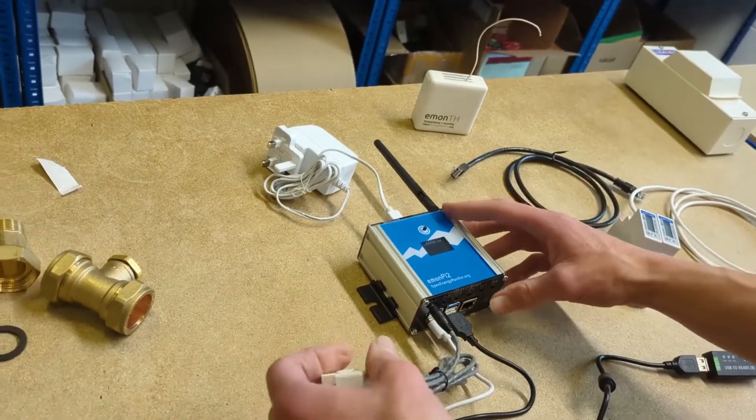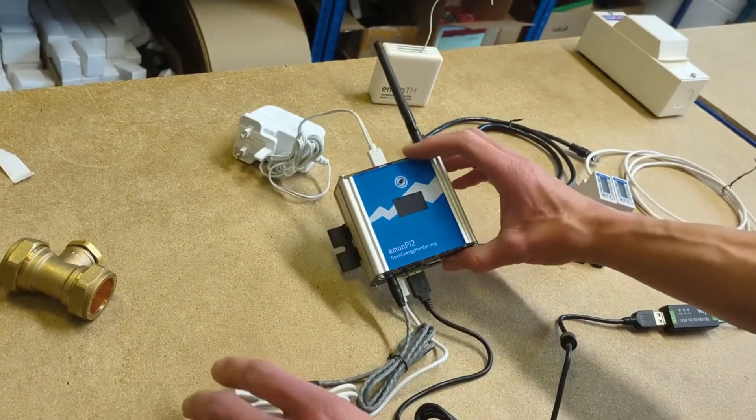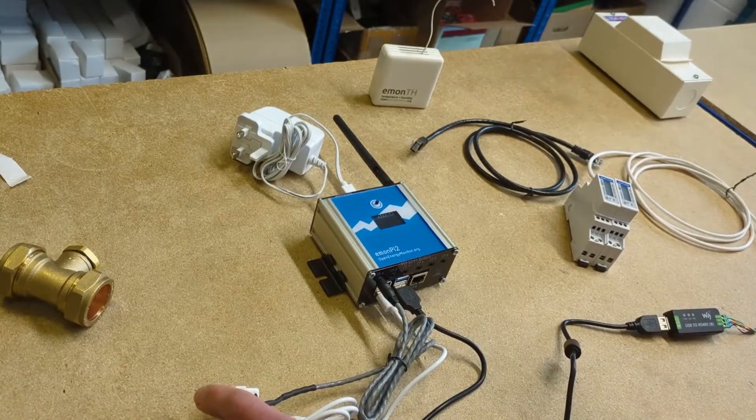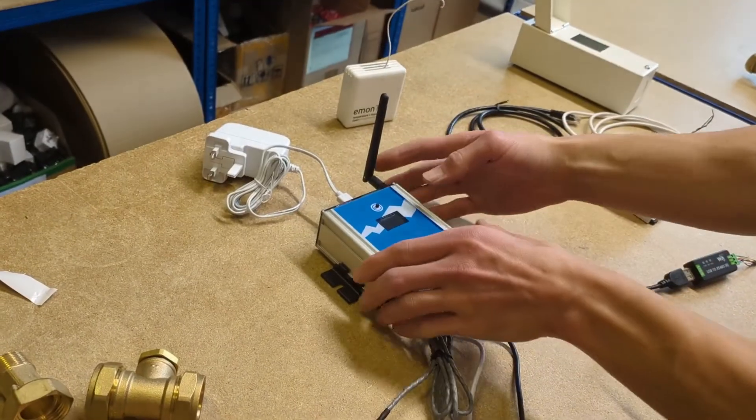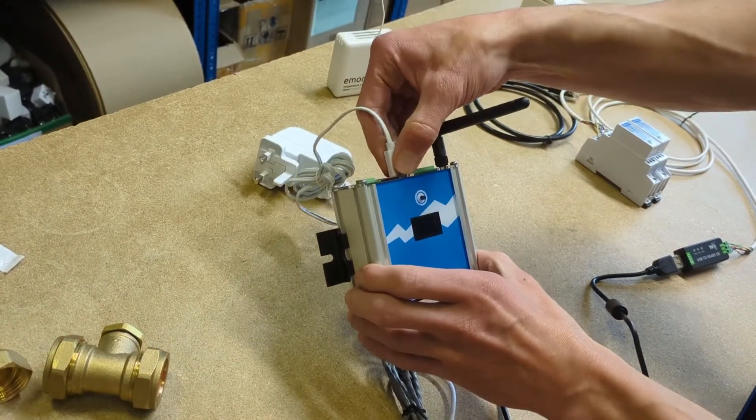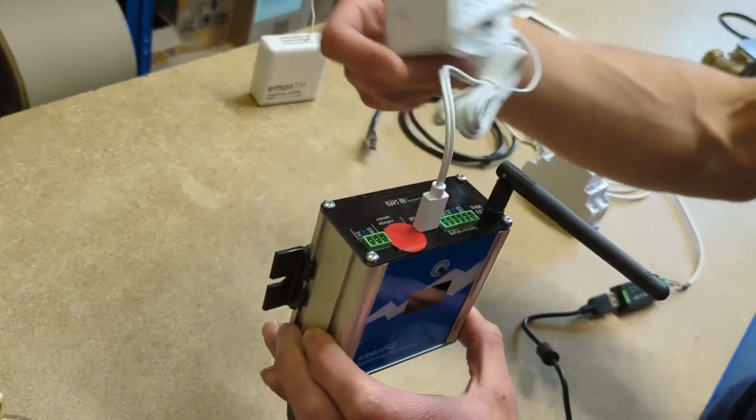Wi-Fi setup is pretty straightforward. It creates an access point that you can connect to and enter in the customer's Wi-Fi details. That's all documented in the installation guide. The final connection on this data logger is just the power supply. It's a USB-C power supply that plugs into the top there.